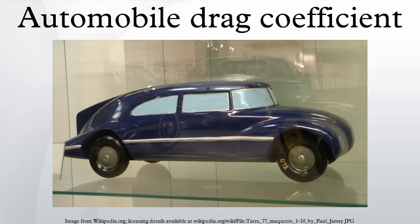This is commonly seen in vehicles such as the first generation Honda Insight. Front fender skirts have the same effect on reducing drag as the rear wheel skirts, but must be further offset from the body in order to compensate for the tires sticking out from the body of the vehicle as turns are made.